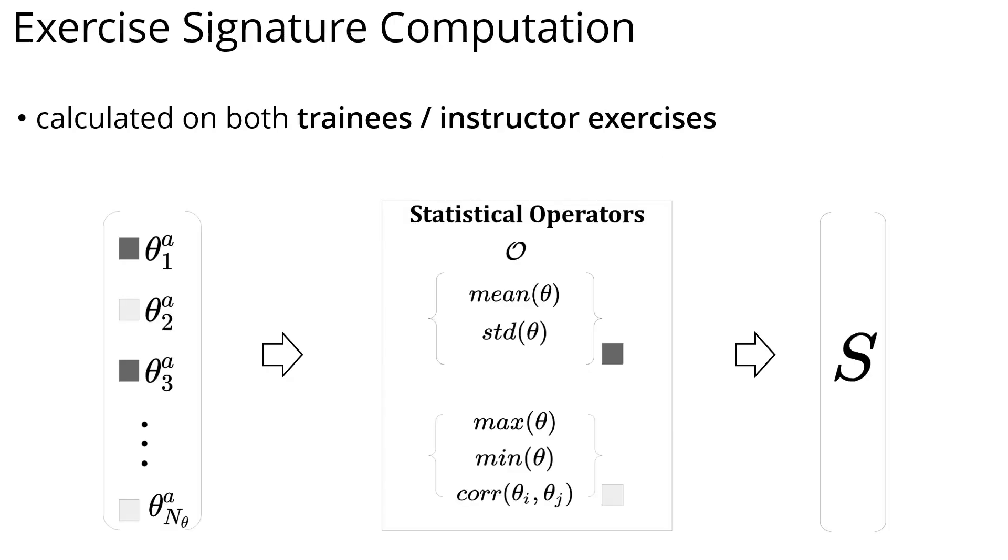We can now apply standard statistical operators on these angular features, to obtain a signature of each exercise, performed either by a trainee or an instructor. This signature is a space allowing comparison to the trainer's movement, allowing for detailed 3D feedback.